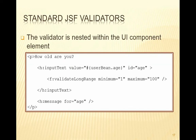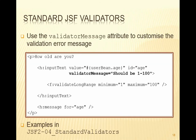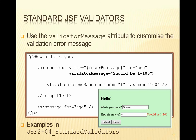Here's an example where we've got an input text that needs to be an integer. The ID is age, bound to the age property in the user bean, so the conversion will happen first — the string will be converted to an integer. We can use the validate long range tag to make sure that integer value is in the range 1 to 100 inclusive. If the value is outside of that range, the message for age will be displayed immediately underneath that text box. It's not a very nice error message, so we can specify an attribute called validatorMessage to override it — for example, validatorMessage equals "should be 1 to 100".